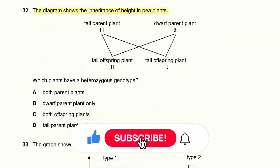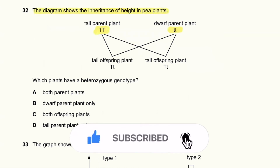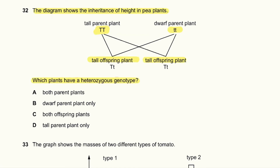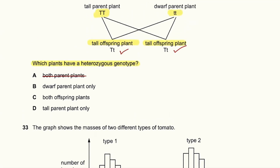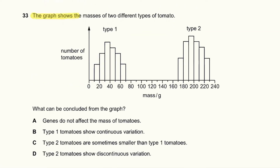Question 32: The diagram shows the inheritance of height in pea plants — tall parent TT crossed with dwarf plants. Which plants have a heterozygous genotype? All the tall offspring plants have a heterozygous genotype. So C — both offspring plants — is the correct answer.